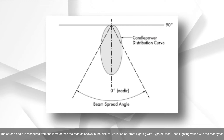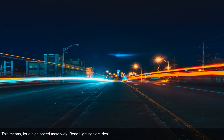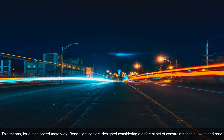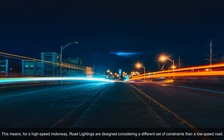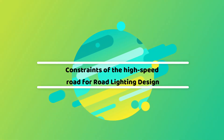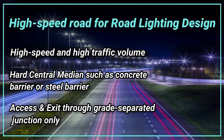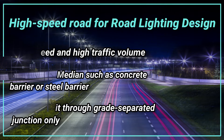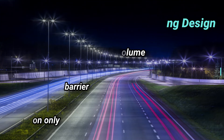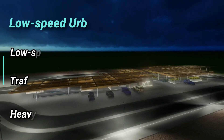Road lighting varies with road types. For a high-speed motorway, road lightings are designed with a different set of constraints than for a low-speed road. Constraints for high-speed road lighting design include: high speed and high traffic volume, hard central median such as concrete or steel barrier, and access and exit through grade-separated junctions only.